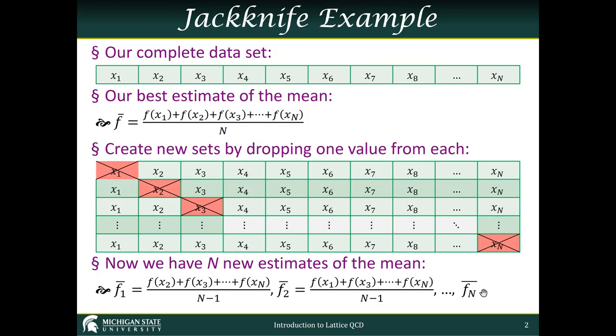Here's an example of how we would use the jackknife. Consider some dataset, which I've written up here as x1 through xn. We have some function f that we know how to apply to our dataset — say, you take a correlator on your configuration and then extract the mass from it. So you apply f to each of these values and divide by n in order to get the mean.